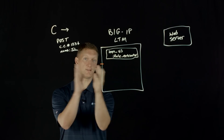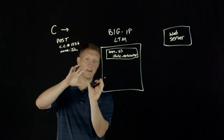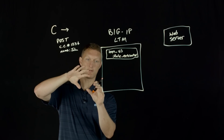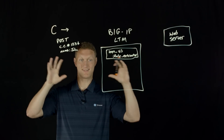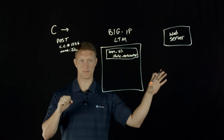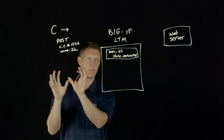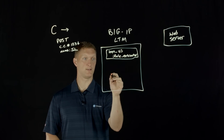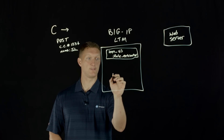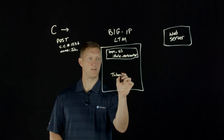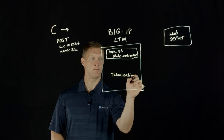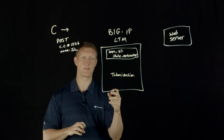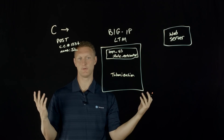The iRule on the first virtual server looks for sensitive data — in this case, a credit card number. It extracts the credit card number out of the POST data, saves it in a temporary location, and saves everything before and after the credit card number in a separate location. Then there's a second virtual server on this LTM — the Tokenization virtual server — because it's going to tokenize, effectively encrypt, the credit card number.